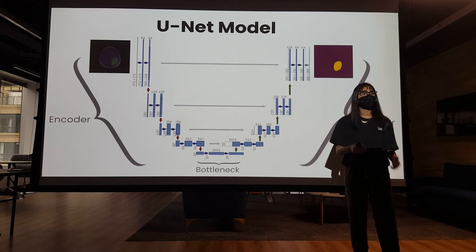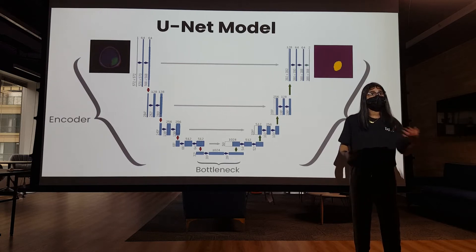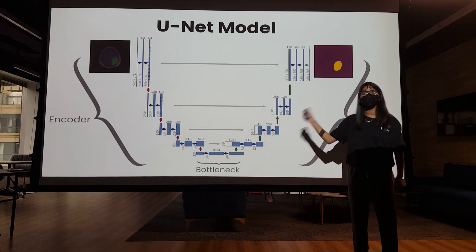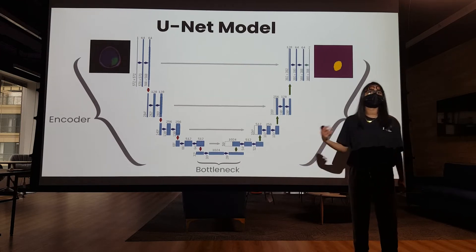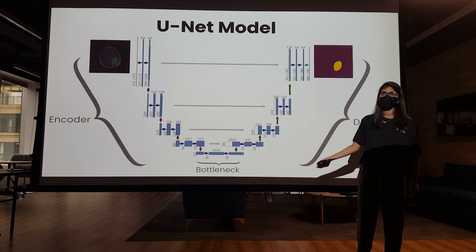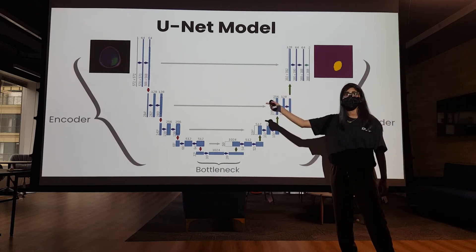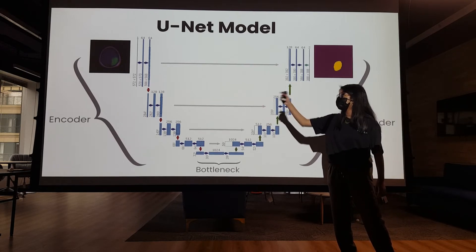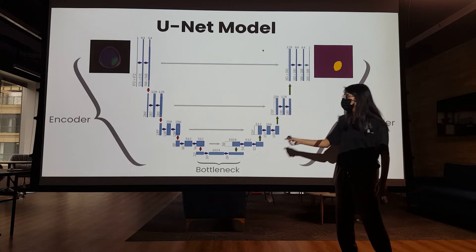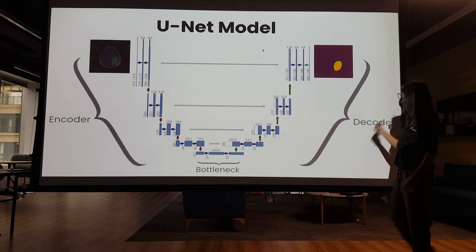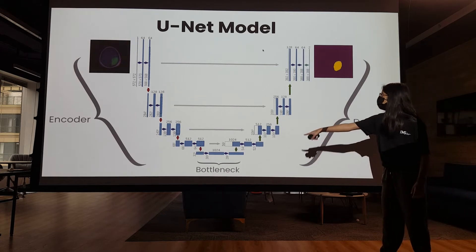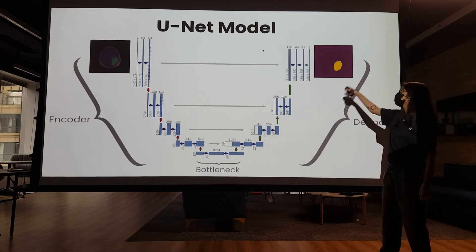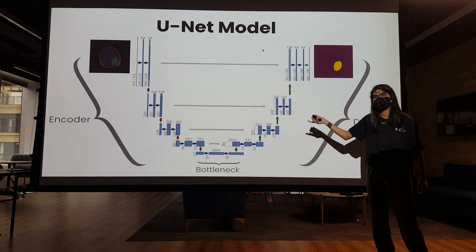My project used semantic segmentation to segment brain tumors out of MRI scans, and it did this specifically with a UNET model, which is commonly used for semantic segmentation tasks. It starts off with the input, which is the brain MRI scan, and then it goes to the model — specifically the encoder and the decoder — connected with the bottleneck. And then in the end, you have the segmented output.